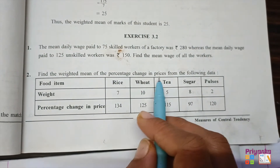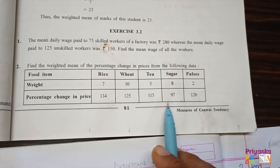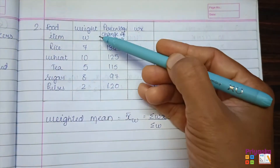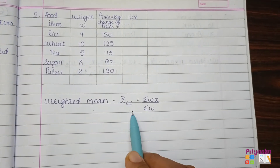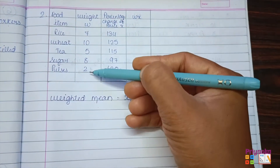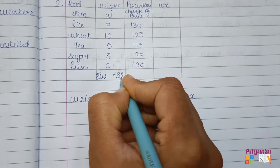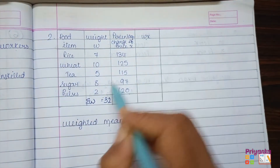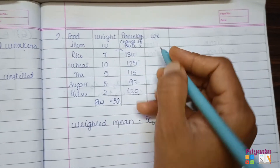Moving to the next question: find the weighted mean of percentage change in price from the following data. Food items are given with their weightage and percentage change in price. The formula for weighted mean is: x-bar-w = sigma(wx) / sigma(w). The total of weights, sigma(w), is 32. For sigma(wx): 7 × 134 = 938.